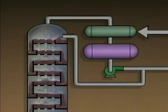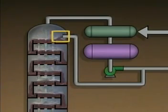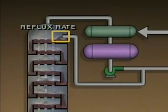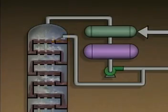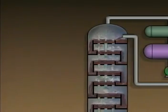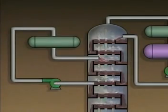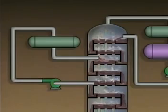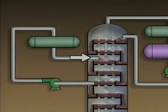The temperature at the top of the tower is controlled by the amount or the temperature of the cool liquid that's pumped back into the tower from the overhead receiver. This is called the reflux rate. Increasing the reflux rate decreases the temperature at the top of the tower. Some distillation systems contain equipment known as pump-arounds. The purpose of a pump-around is to remove hot liquid from the tower and pump it through a cooler. The cooled liquid is then reintroduced at a higher level in the tower. A pump-around helps control the temperature of the internal reflux.